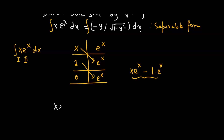So this is the value of the integral on the left hand side. Let's write it down: x e raised to the power of x minus e raised to the power of x equals to negative, and on the right hand side we have the integral of y divided by square root of 1 minus y squared dy.